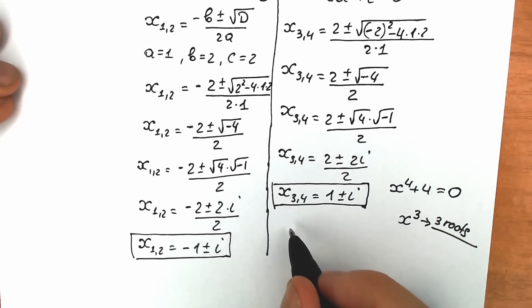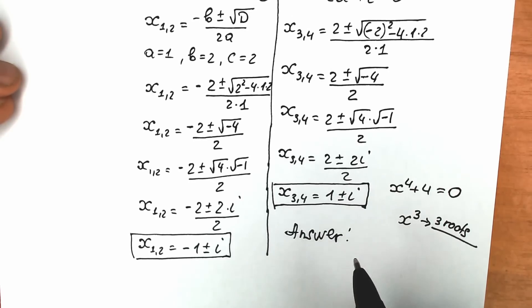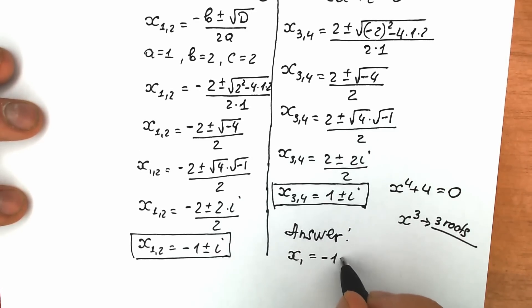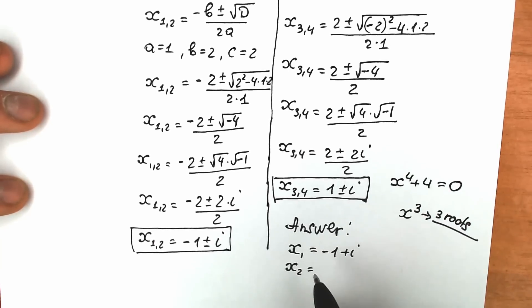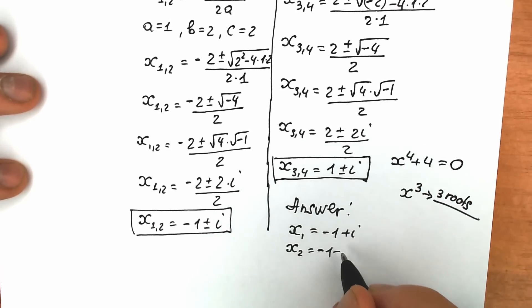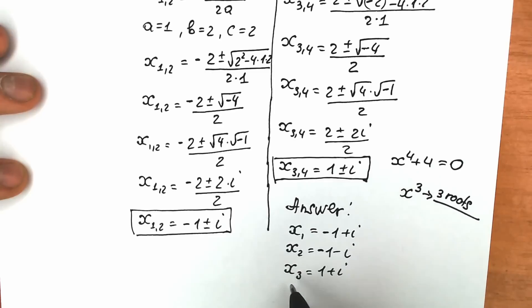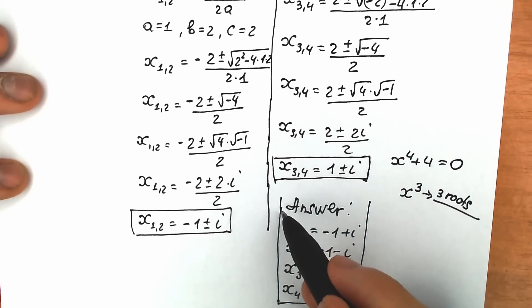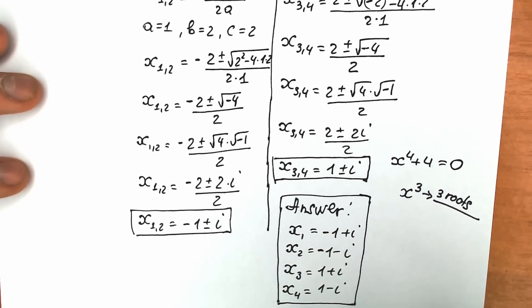Let's write our final answer. x₁ = −1 + i, x₂ = −1 − i, x₃ = 1 + i, x₄ = 1 − i. We found all four roots — not just one. We found a complex solution, and that's perfectly fine in mathematics.